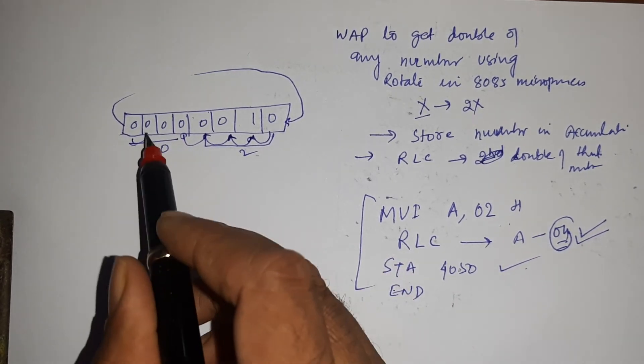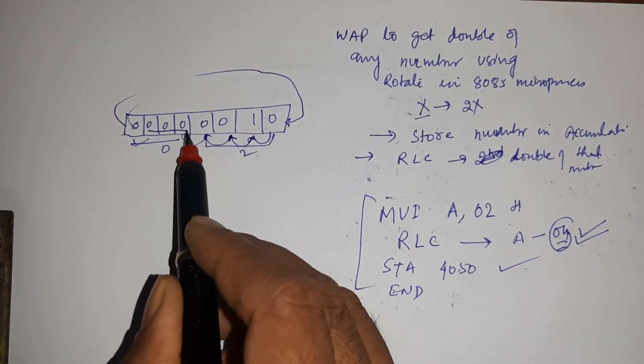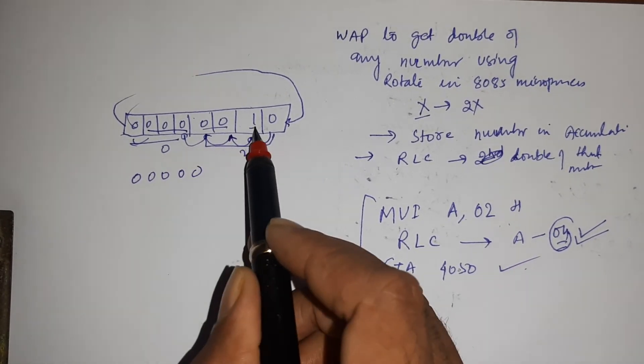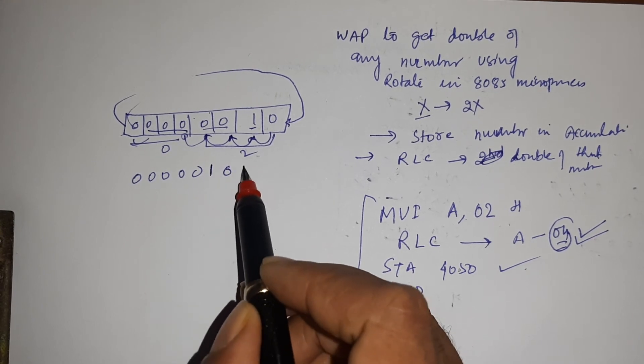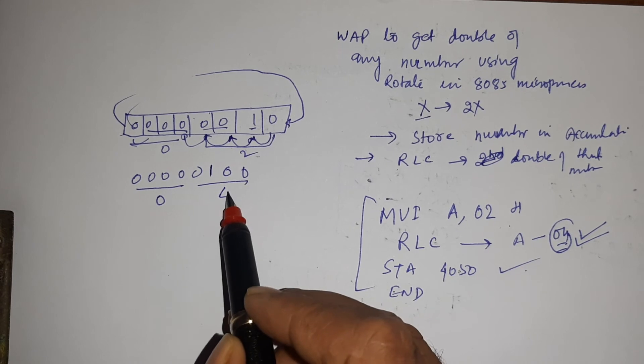Here what happens, this bit will shift here. Remaining as 00000100. So here you can see 04. So by using RLC we can get double of that number in one line program.